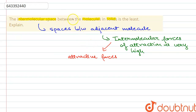That is the reason why intermolecular spaces between molecules in solids are least, compared to liquids and gases. In liquids and gases, the intermolecular forces are less, so the molecules can move freely and the spaces between them are also more.